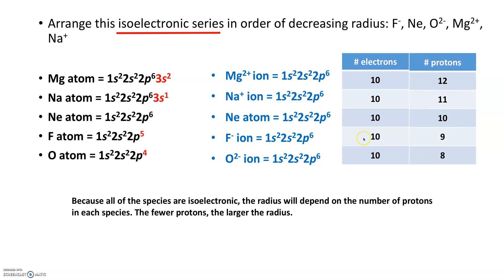When I look, magnesium has 12 protons and you can look at the atomic number for that. The sodium ion has 11, neon has 10, the fluoride has 9, and the oxide has 8.